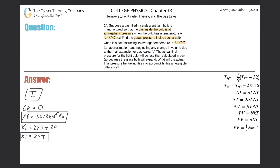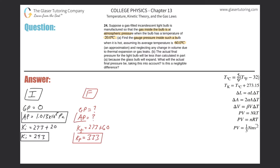Now for the final conditions: we want to calculate the final gauge pressure, but first we need the final absolute pressure. The final temperature is 273 + 60 = 333 K. We use the combined gas law: (Pi × Vi)/(ni × Ti) = (Pf × Vf)/(nf × Tf). They don't mention moles, so those cancel. Part A states volume is constant, so volume cancels too.